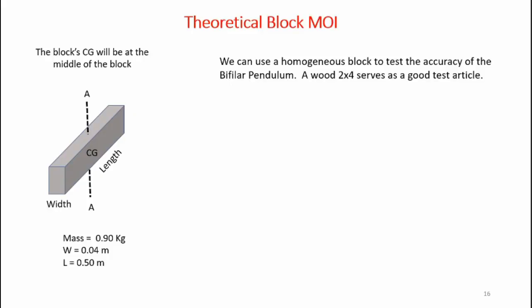Here's how I will calculate the theoretical MOI for the wooden test block. I like using a two by four because the wood is somewhat homogeneous and the rectangular nature of the block makes the calculations relatively easy. Now on the left hand side at the bottom we see the parameters for the wooden block. It has a mass of 0.9 kilograms, a width of 0.04 meters, and a length of 0.5 meters.